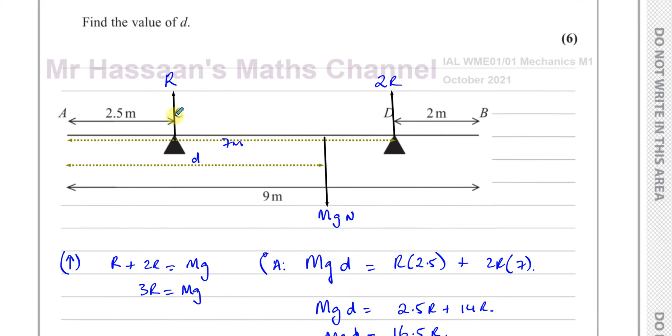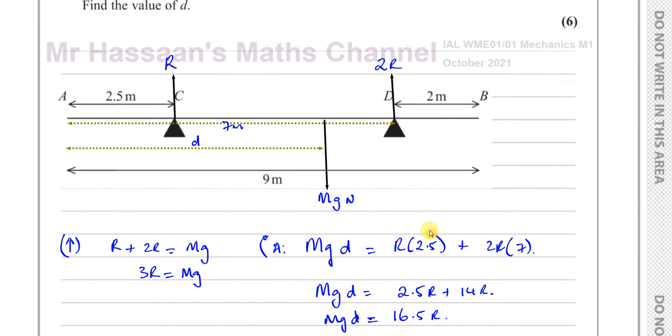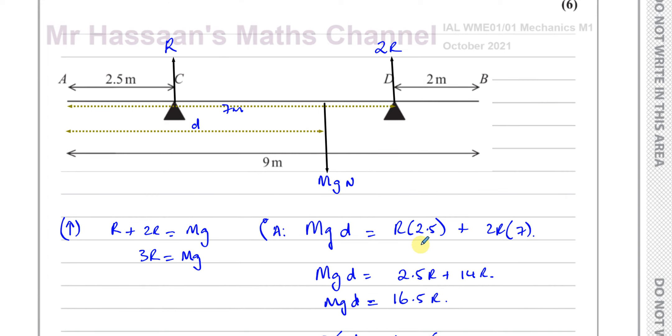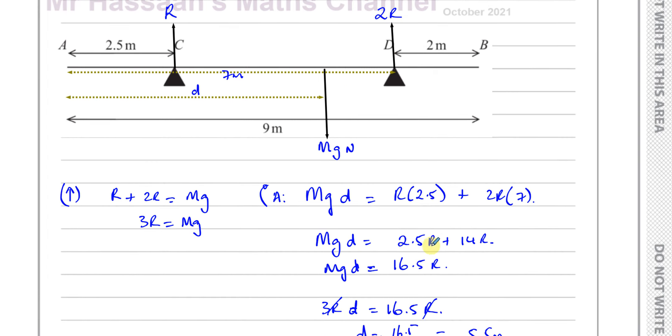And also the moments, the clockwise moments about any point that you want to take the moments about will also be balanced because it's in equilibrium. So if we take moments about A, the clockwise moments and the anticlockwise moments will be the same. So the clockwise moments, Mg times D equals R times 2.5 plus 2R times 7. And that gives us our second equation.